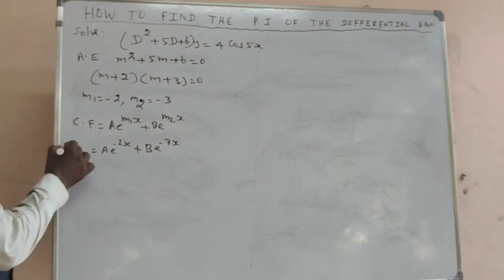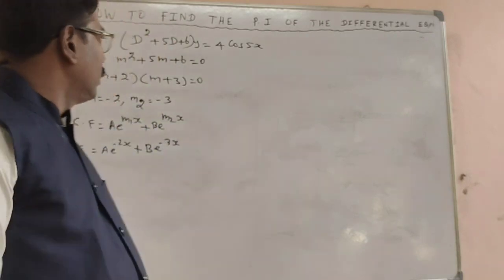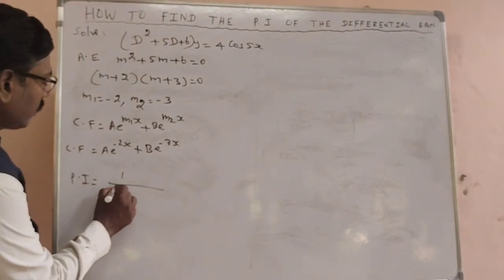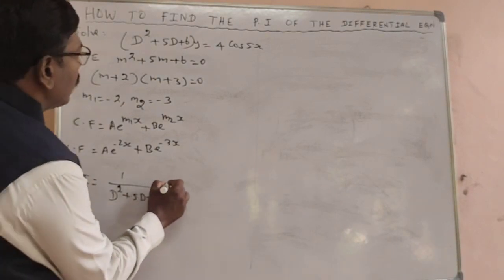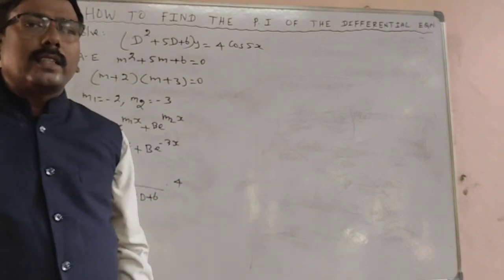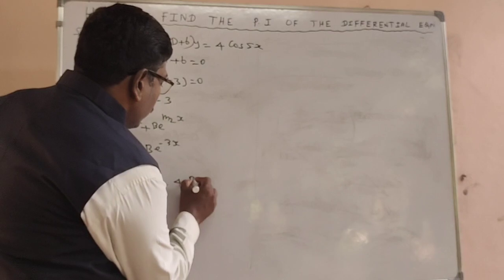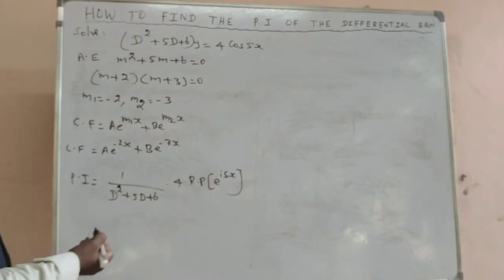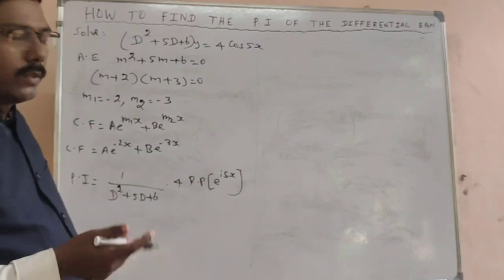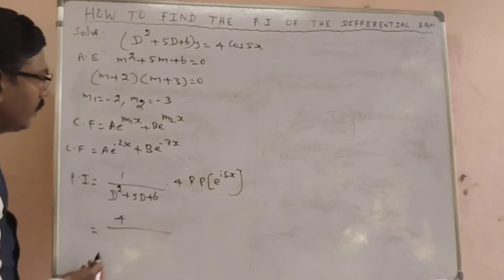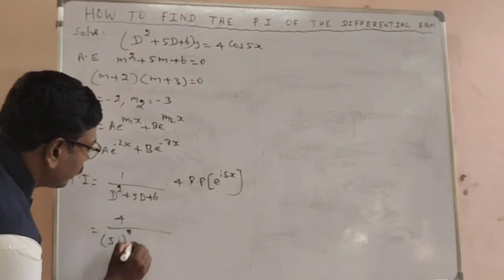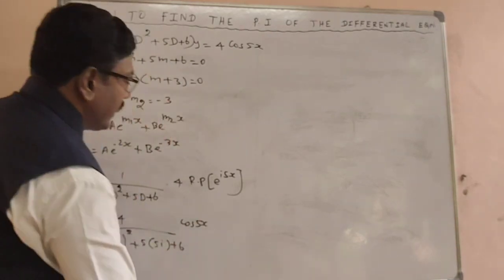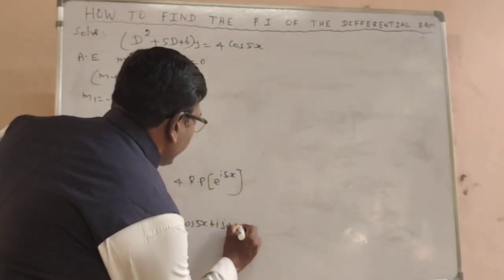Now we are going to find the particular integral. The particular integral equals 1/(d² + 5d + 6) times 4·cos(5x). This is the real part of e^(i·5x). So we have to write it as the real part of e^(i·5x), and replace d with 5i: 4/((5i)² + 5·(5i) + 6) multiplied by (cos(5x) + i·sin(5x)). We have to consider the real part.